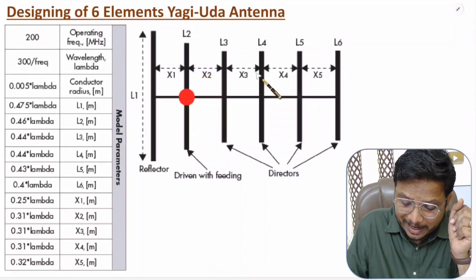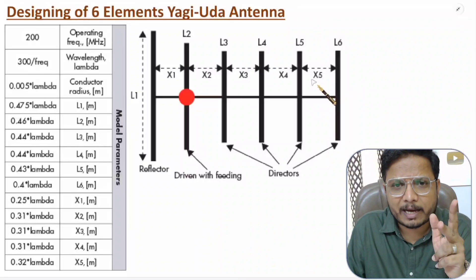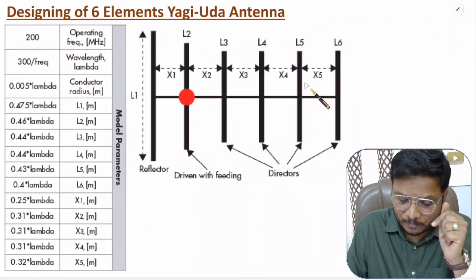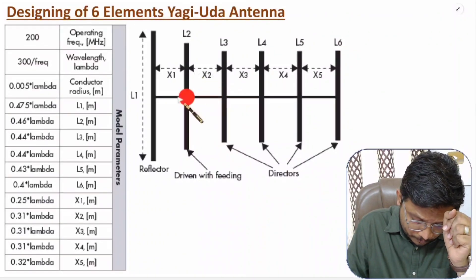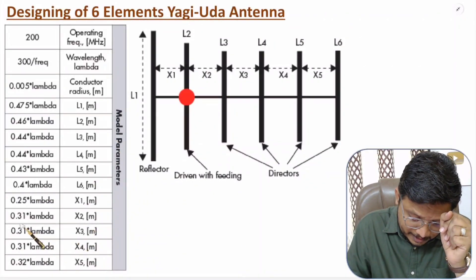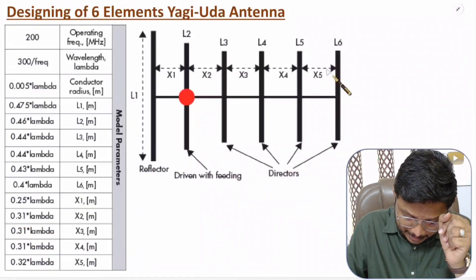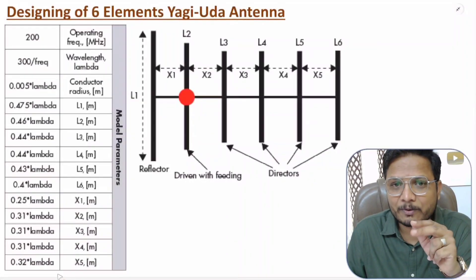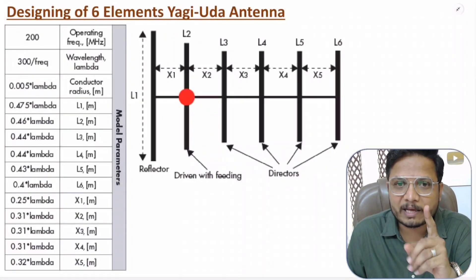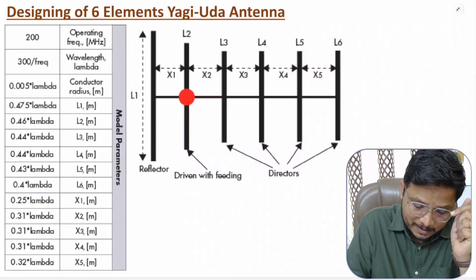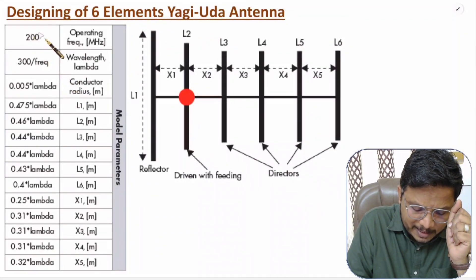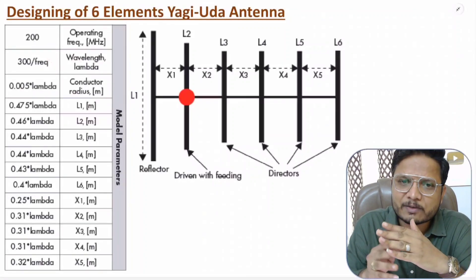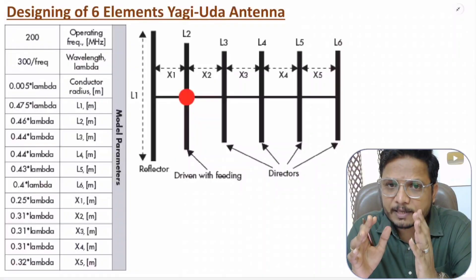The spacings x2, x3, x4, and x5 can be optimized based on the functioning of the Yagi. With this specific design, x2, x3, and x4 are 0.31 lambda, and x5 is 0.32 lambda. However, with respect to frequency, you will have to optimize this spacing. I have explained this design with respect to some specific range of frequencies, but with respect to frequency, changes will always happen and you will have to optimize that spacing.